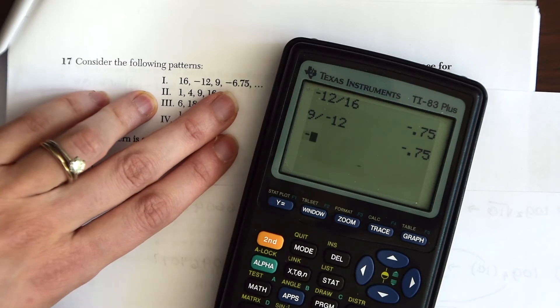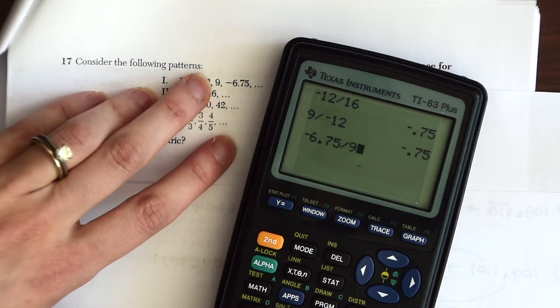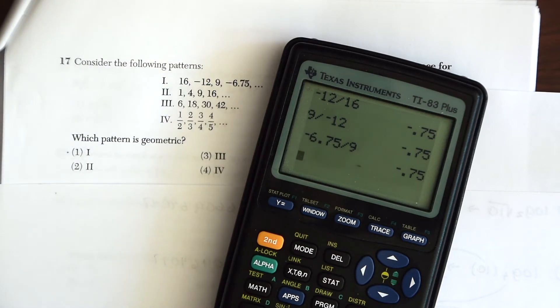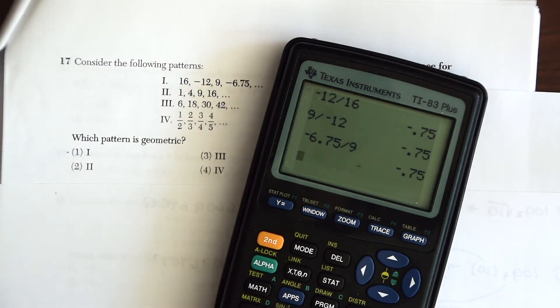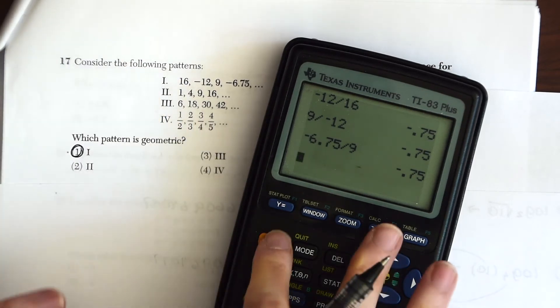So now let's check negative 6.75 divided by 9, the next two terms. And so this is our answer because the relationship of each term is based on multiplication or division. So we know that choice one is our answer.